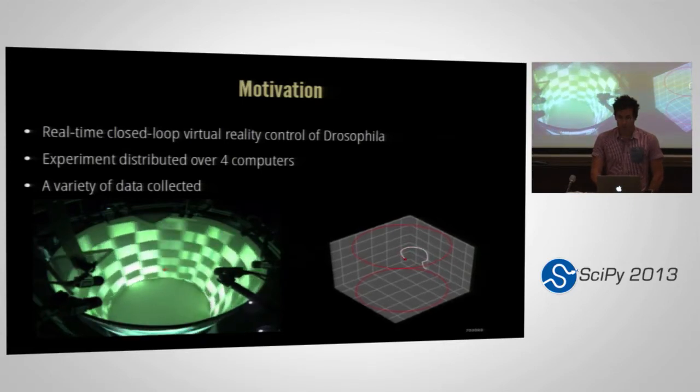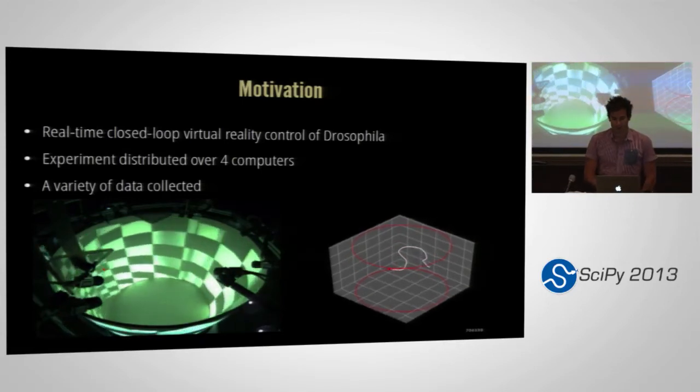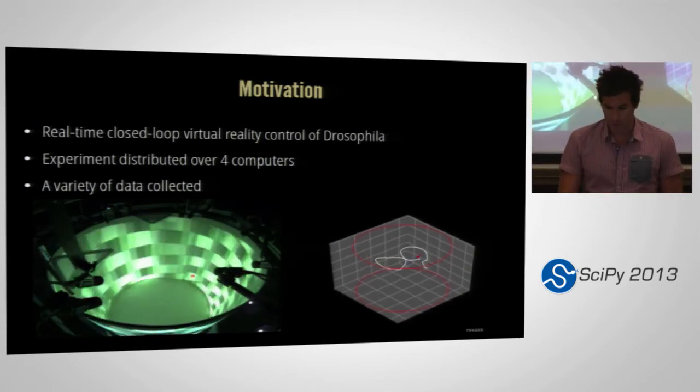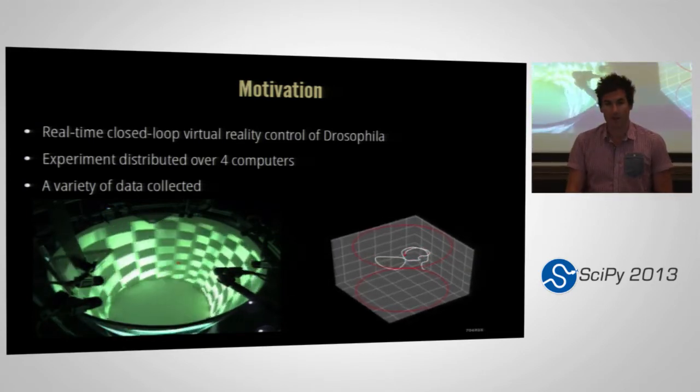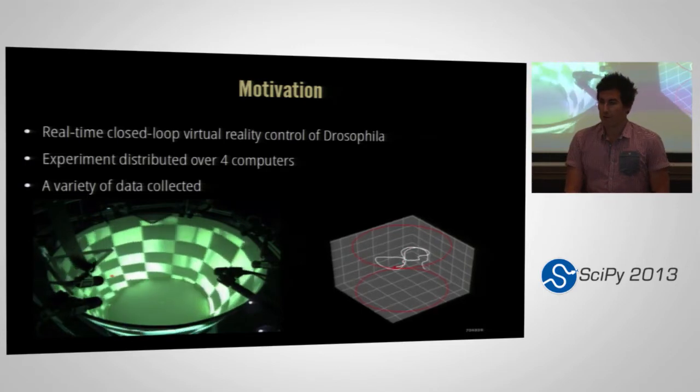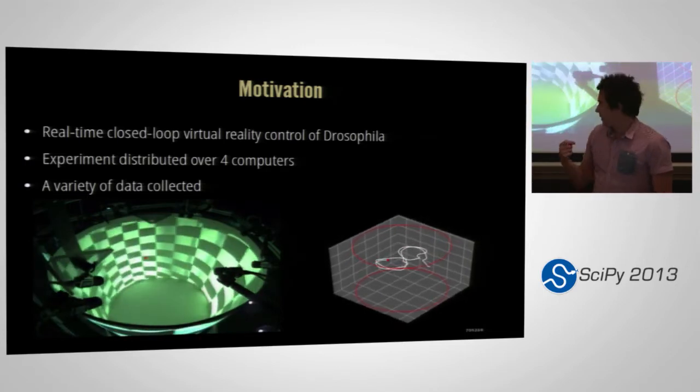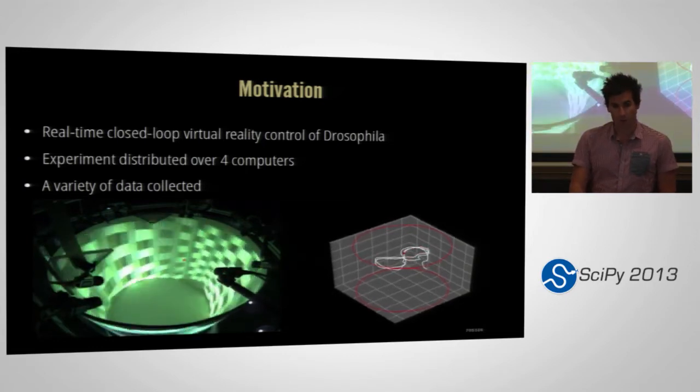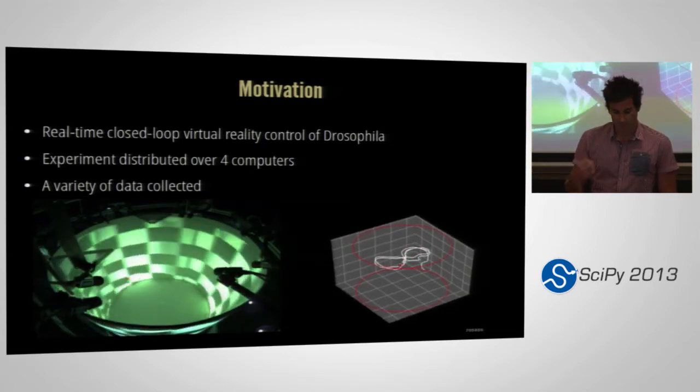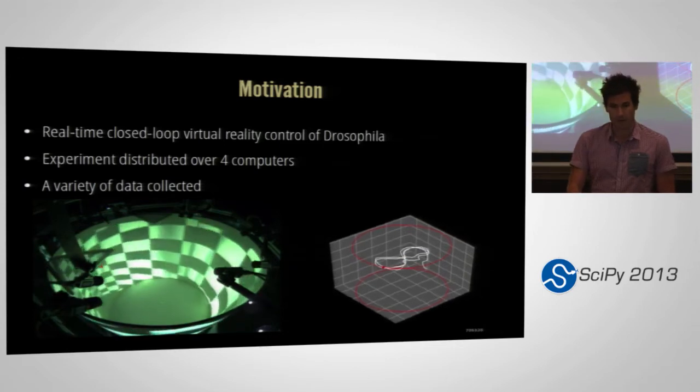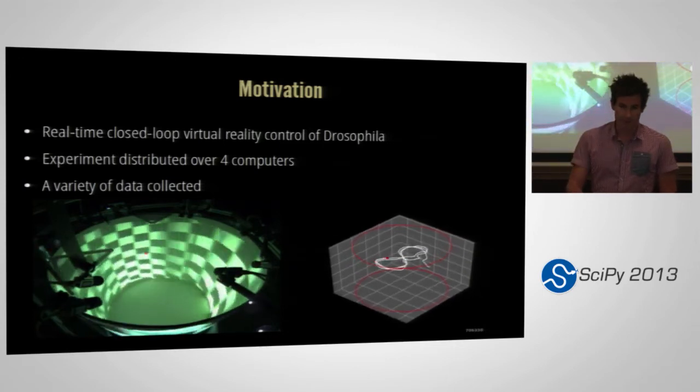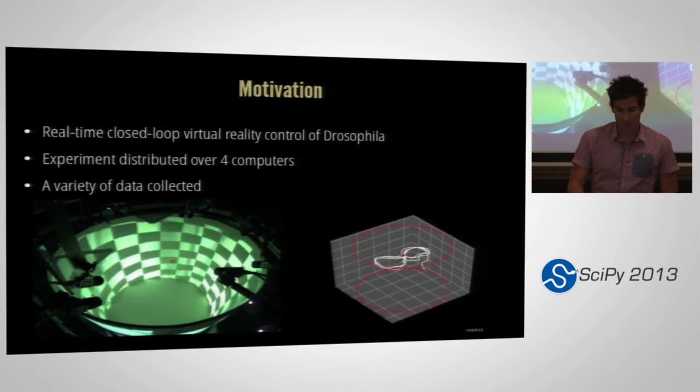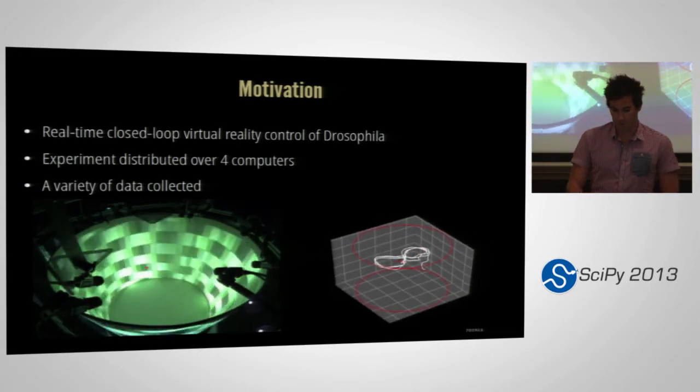In the Straw lab, which is where I work, we perform virtual reality experiments on flying Drosophila, which is a fruit fly. And we do this for the purposes of understanding how the visual system works. What you see here is Drosophila circled by the red circle under real-time closed-loop control of our system. The fly is being tracked by ten cameras around the top of the arena, and onto the sides we're projecting a virtual reality, which is also a cylinder, confusingly, in which the Drosophila is trapped.